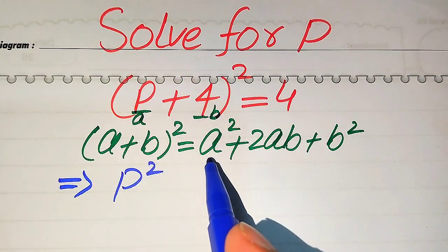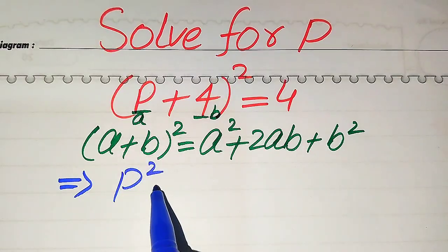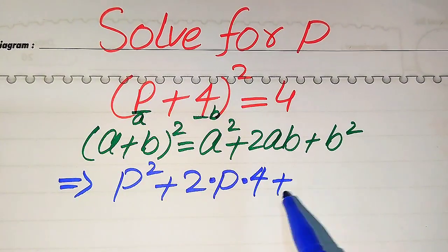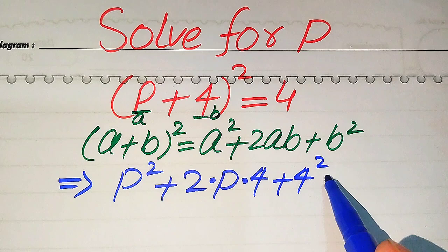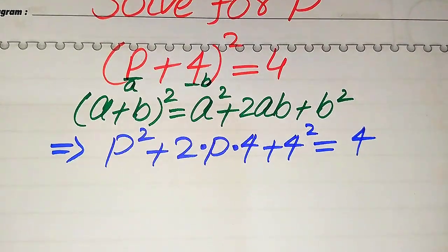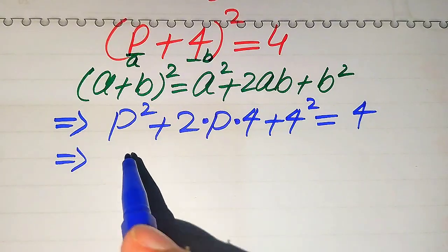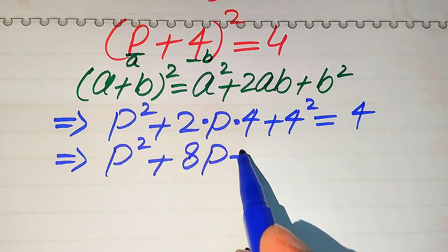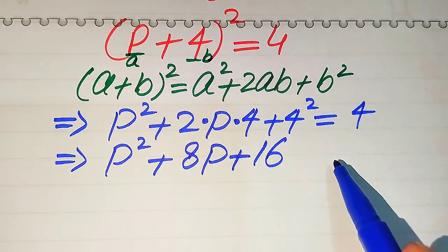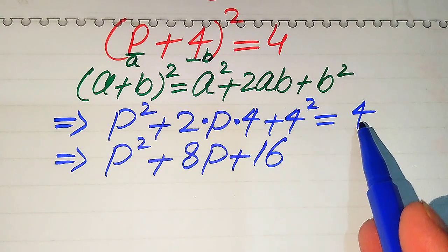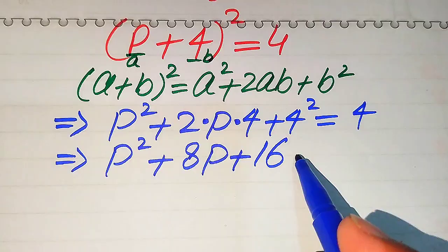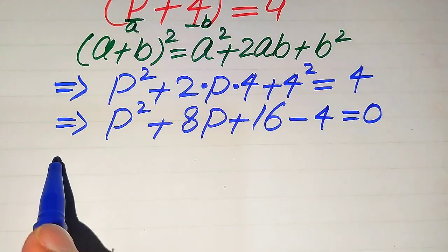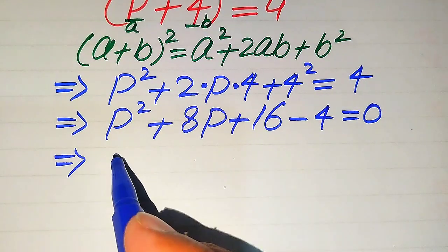After applying the formula, we write the left-hand side as: a² gives us p², then 2ab gives us 2 times p times 4, and b² gives us 4² = 16. So we get p² + 8p + 16 = 4. We then move the 4 from the right-hand side to the left-hand side, making it negative.